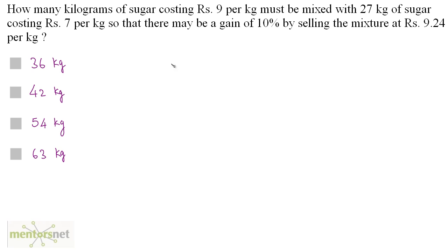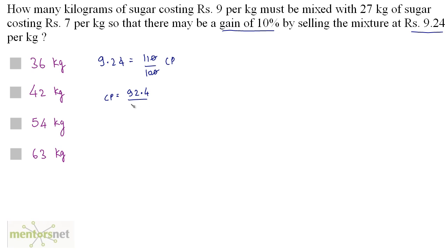We have been given the selling price: Rs. 9.24 per kg. Let's find the cost price. 9.24 equals a 10% increase in cost price, that is 110/100 times cost price. So cost price equals 92.4 divided by 11, which equals 8.4. So the mean price M is 8.4. The cheaper rate is Rs. 7 per kg, so C equals 7, and D equals Rs. 9 per kg.